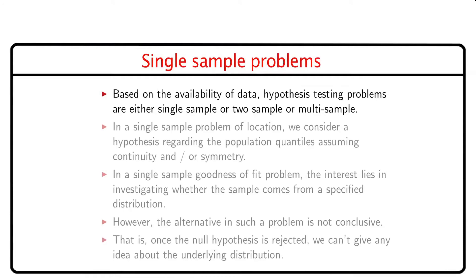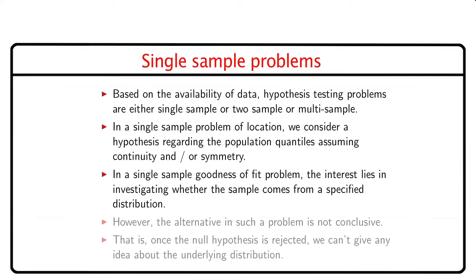Next, we shall discuss different types of hypothesis testing problems in non-parametric inference, starting with single sample problems. In a single sample problem of location, we consider a hypothesis regarding the population quantiles assuming continuity or symmetry, and sometimes both. There is another type of single sample problem, namely the goodness of fit problem, where the interest lies in investigating whether the sample comes from a specified distribution. However, the alternative in such a problem is not conclusive — once the null hypothesis is rejected, we cannot give any idea about the underlying distribution.